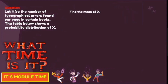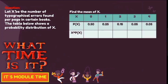For this given item, you have to find the mean of x. Using the table, the value of x goes from 0 to 4 — that is Step 1. The probabilities of x are 0.50, 0.25, 0.15, 0.05, and 0.05 — that is Step 2.